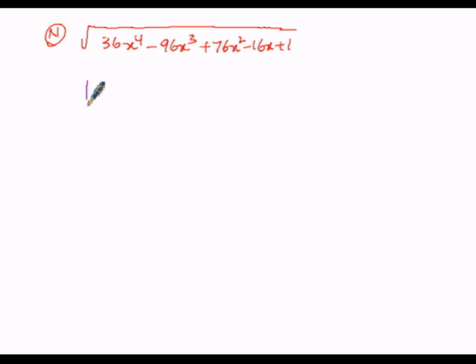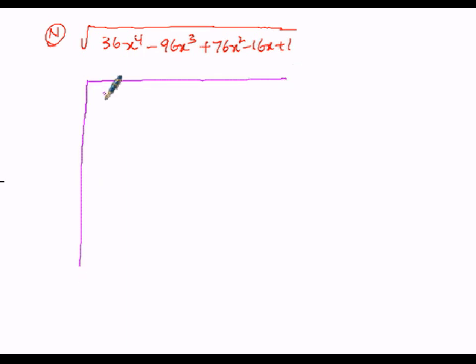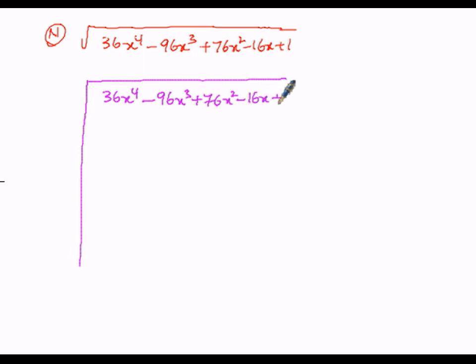In the division method, we have the polynomial 36x to the power of 4 minus 96x cubed plus 76x squared minus 16x plus 1. Here, the first term is 36x to the power of 4 with a positive sign.